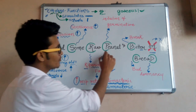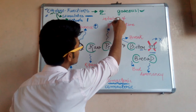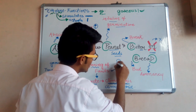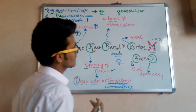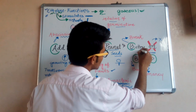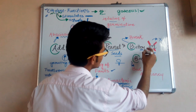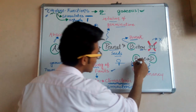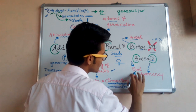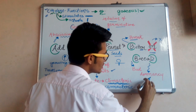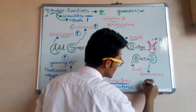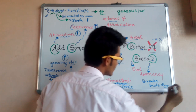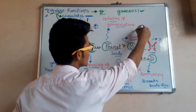'Peanut' — as the name indicates — refers to the initiation of germination of peanut seeds, which is done via ethylene. 'Butter' — the first and last letters B and R — simply means 'break.' 'Bread' has two key letters B and D, which means buds dormancy. So ethylene breaks bud dormancy.